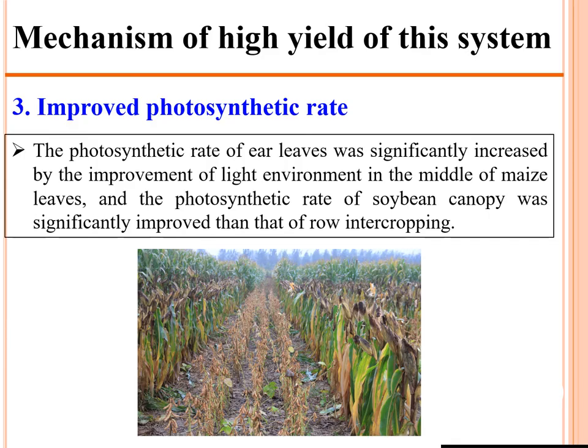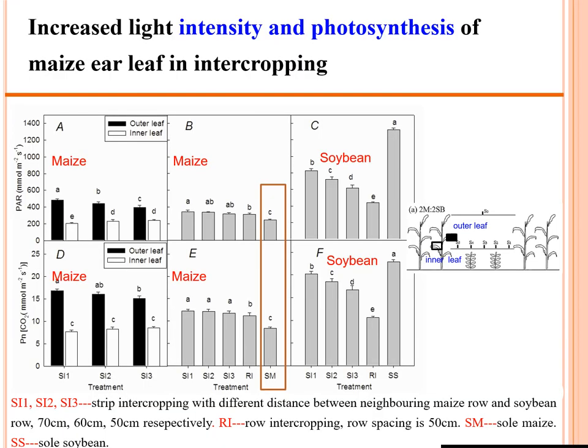The third mechanism is improved photosynthetic rate. The photosynthetic rate of ear leaves was significantly increased by the improved light environment in the middle rows of maize leaves. The photosynthetic rate of the soybean canopy was also significantly improved compared to row intercropping systems. All data on light transmittance and photosynthetic rate of maize and soybean in the intercropping system have been published in different international journals.